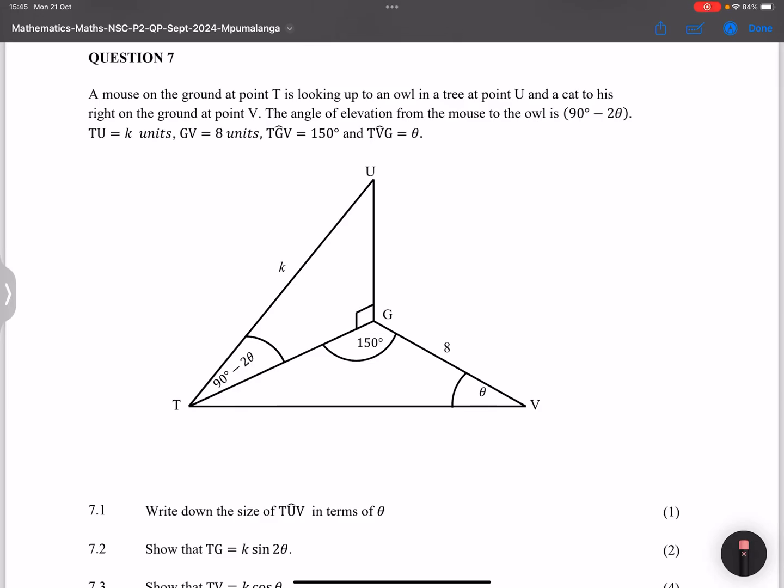And now we look into question 7 ladies and gents. They say that we've got a mouse on the ground at point T which is looking up to an owl in a tree at point U and a cat to his right on the ground at point V.